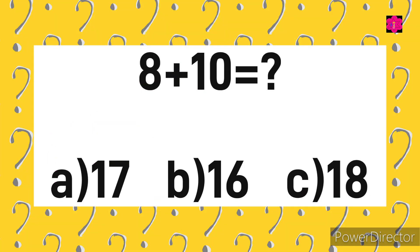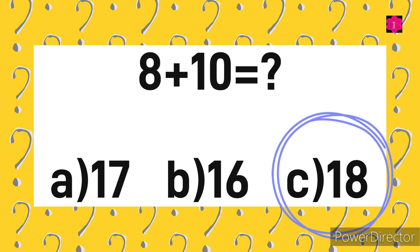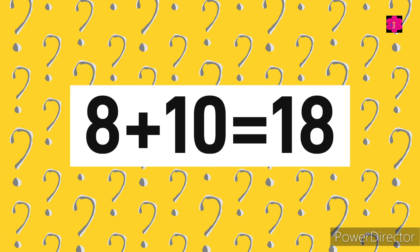Last but not the least: 8 plus 10 is equal to? Your options are A) 17, B) 16, and C) 18. Your time starts now. The correct answer is C) 18. 8 plus 10 is equal to 18.